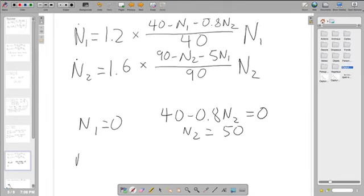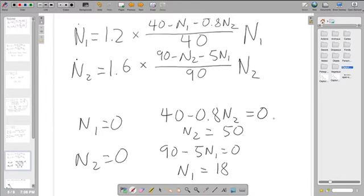And then we do the same step for N2 dot. So we have N2 equals zero, so 90 minus 5N1 is equal to zero, thus giving us N1 is equal to 18. Giving us the points 0, 50, and 18, 0. Just a note, though. These are not steady states, but these are the intersections between all of our null-clines.